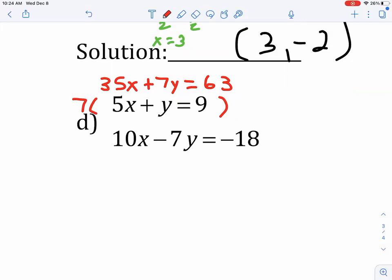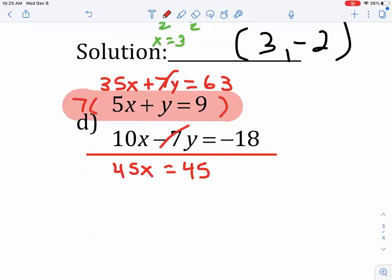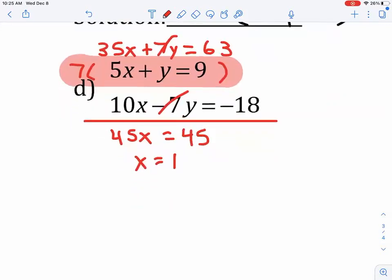So, I multiply everything by 7, because now if I use that top line and this line, if I add those down, now my Ys are going to cancel. So, now I'll add my Xs down, 35X plus 10X is 45X. 7Y, negative 7Y will cancel out. And 63 minus 18 is 45. So, X is equal to 1.